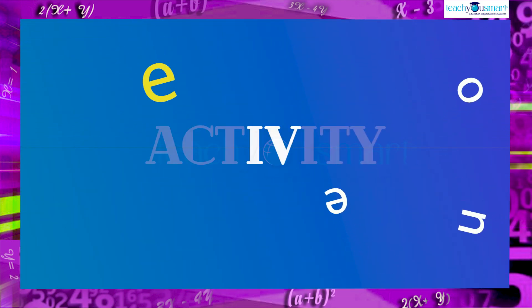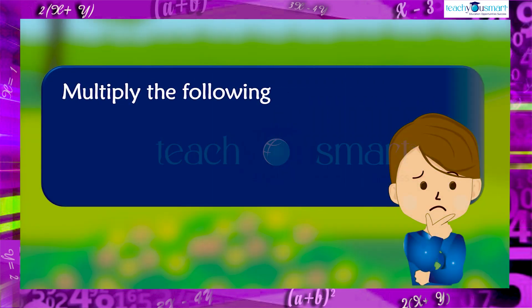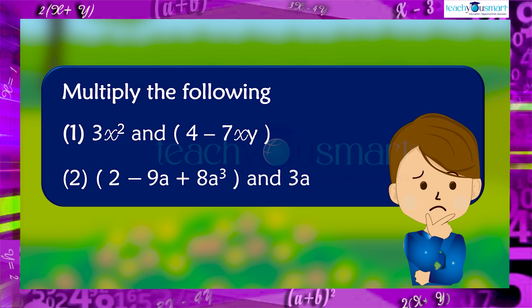Before winding up, let's check how much you understood by doing an activity. Multiply the following. First one is 3x² and 4 minus 7xy. Second, 2 minus 9a plus 8a³ and 3a.